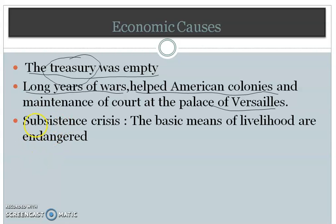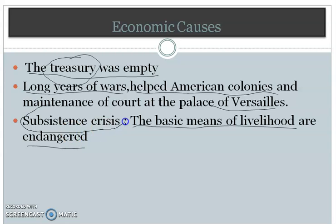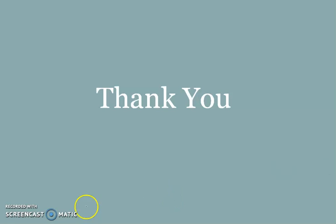In addition to all this, there was a failure of crops — there was drought, there were harsh storms, and the weather was not favorable. This caused a shortage of crops and a shortage of food for the people. Such a situation — a person not having the basic necessities to remain alive — is known as a subsistence crisis. All these were the economic causes that also led to the French Revolution. We have learned about three causes today. Thank you and have a nice day.